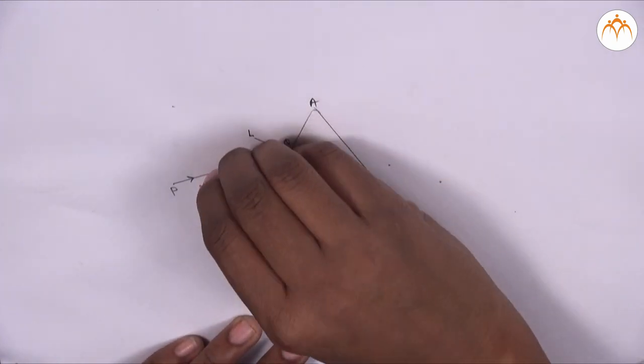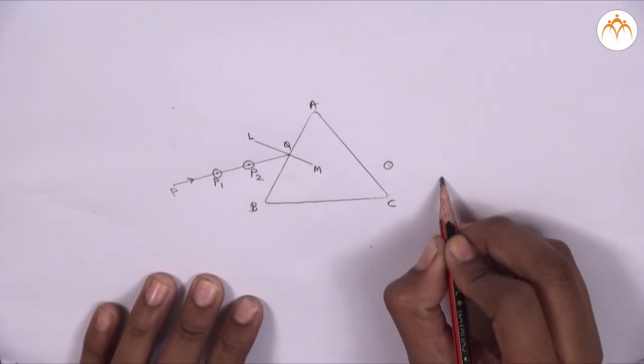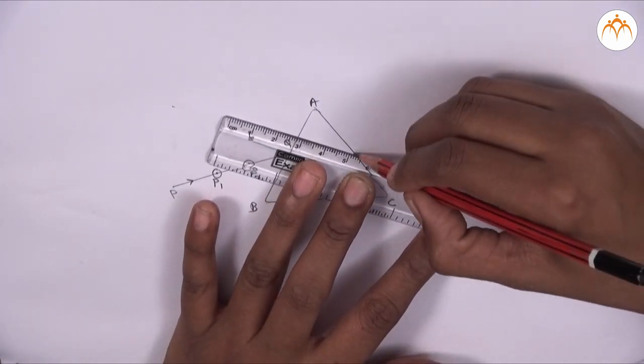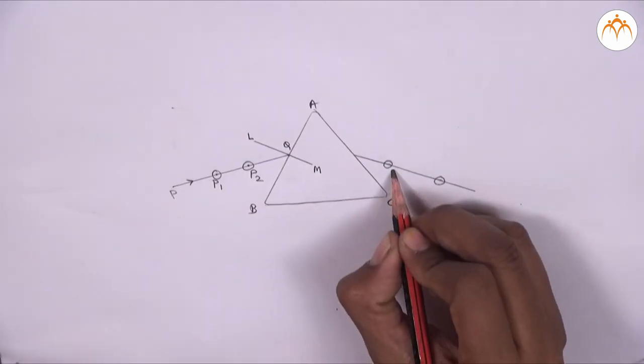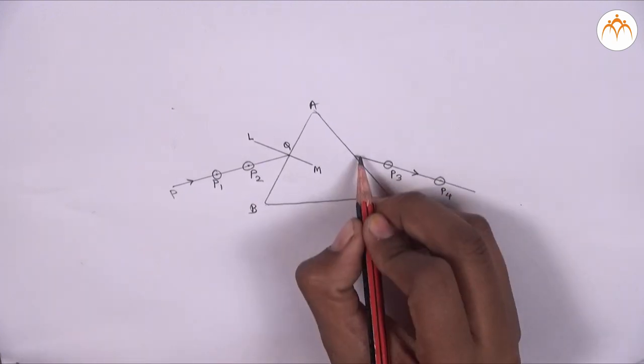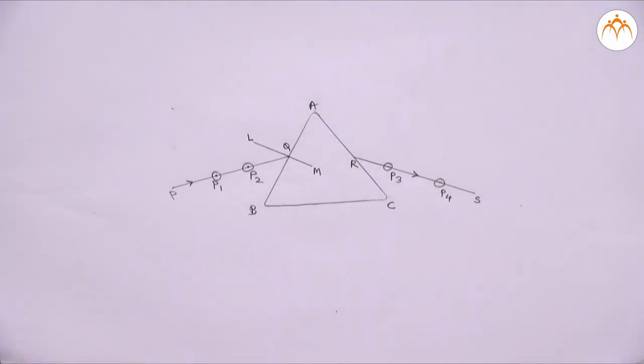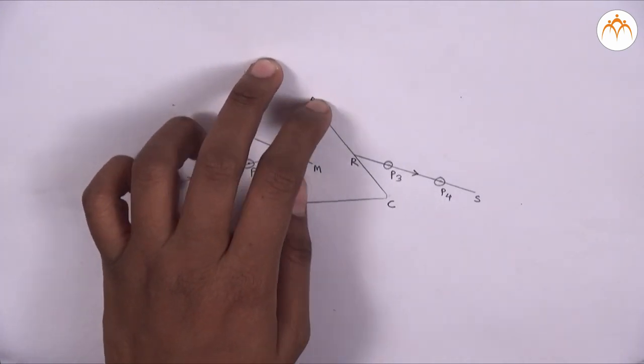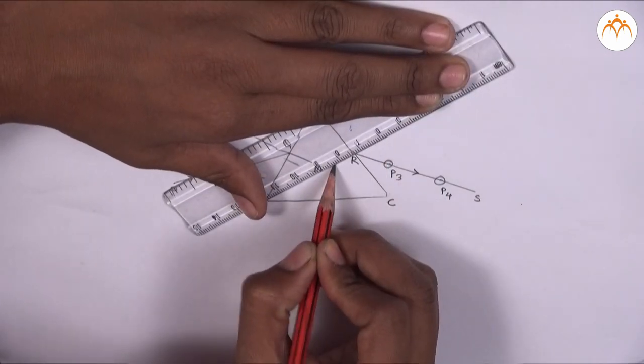Remove the prism and pins. Draw a line towards side AC through the points of pins P3 and P4. Mark these as S and R. It will intersect AC at point R. Draw a normal or perpendicular on side AC through point R.